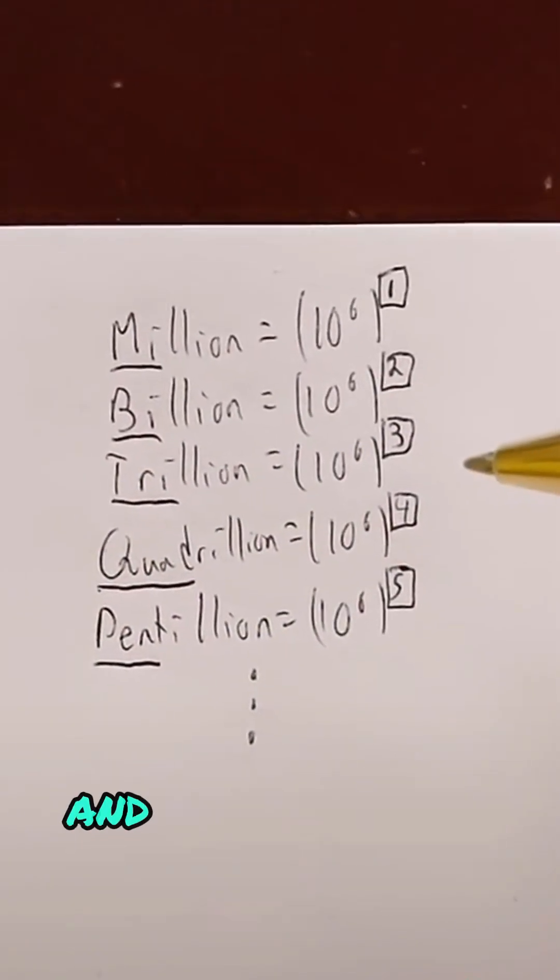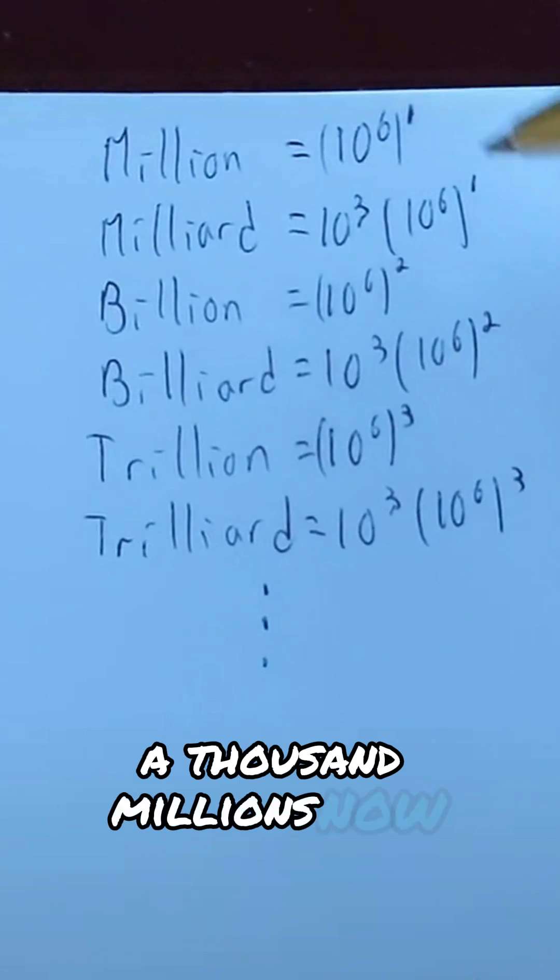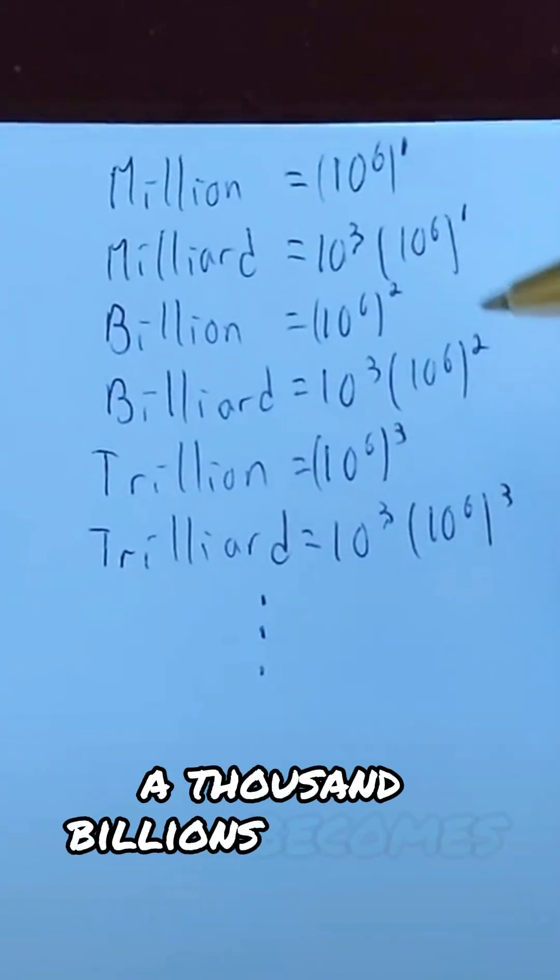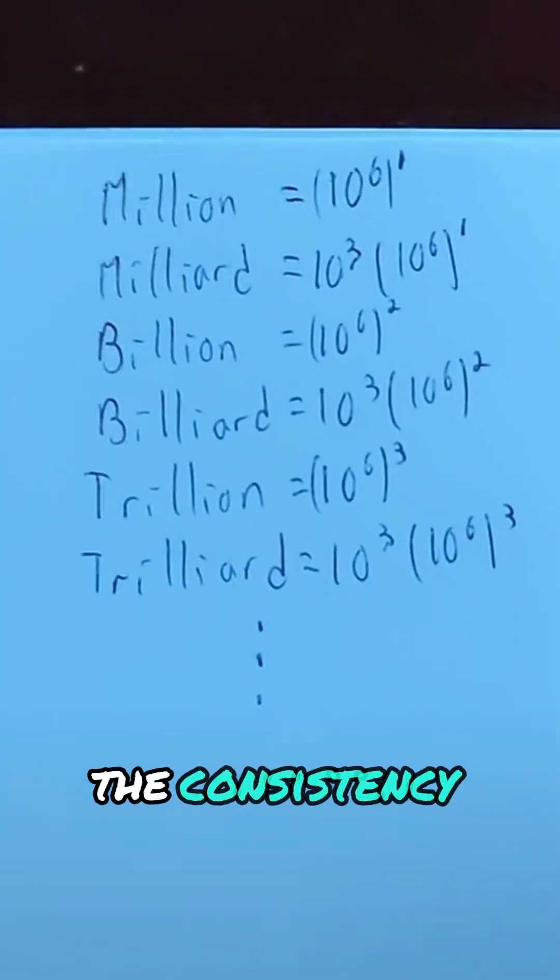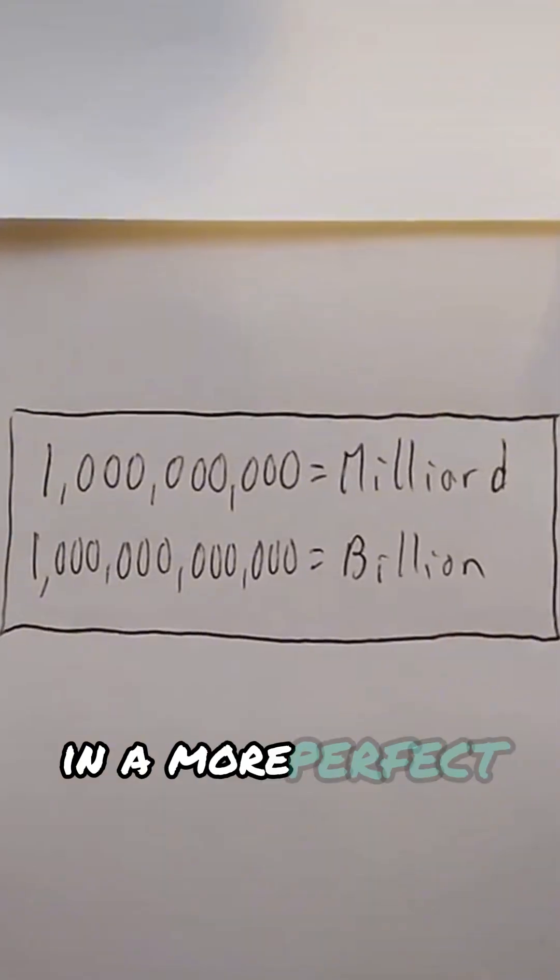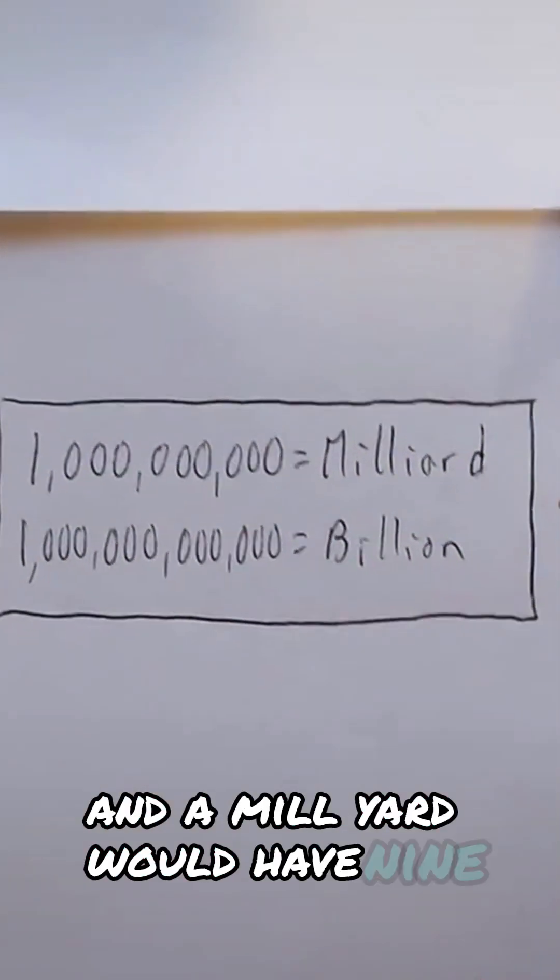But you might have noticed there are some gaps here, and we fill them in like this. A thousand millions now becomes a milliard. A thousand billions becomes a billiard. And we maintain the consistency between the bases and the prefixes. In a more perfect world, a billion would have twelve zeros, and a milliard would have nine.